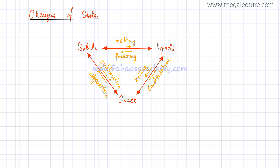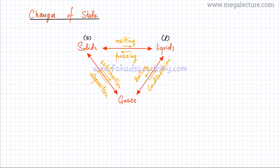These are the different state changes that could occur. The symbols used for describing states are: (s) in brackets for solid state, (l) in brackets for liquid state, and (g) in brackets for gases.